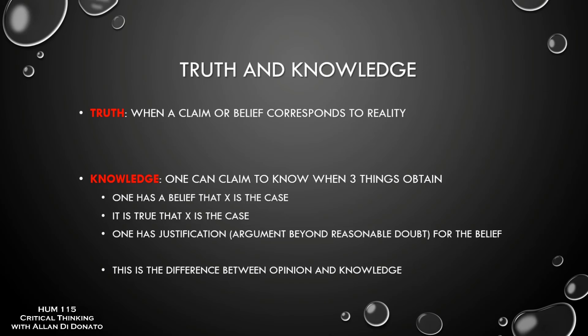A second term — knowledge — is more difficult. We'll use the standard JTB (justified true belief) version. Knowledge is when one can claim to know something is true based on three factors: you have to believe that X is the case, it actually has to be true that X is the case, and you have to have a justification for it — an argument beyond reasonable doubt. If you have those three things, we say you have knowledge.